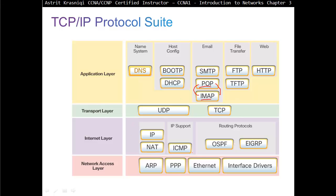At the network access layer, we have protocols including ARP — Address Resolution Protocol — which finds out what MAC address corresponds to a given IP address. You broadcast asking who has IP address 10.1.1.1, and that device responds with its MAC address. PPP is for Wide Area Networks, which you'll learn more about in CCNA Semester 4. Ethernet protocol tells you what kind of cabling to use — straight-through, crossover, and so on. We also have interface drivers.